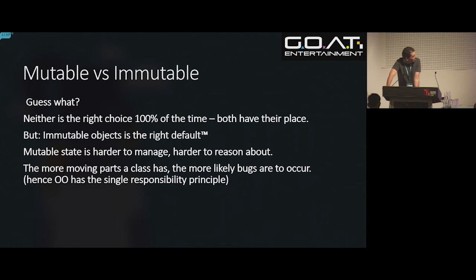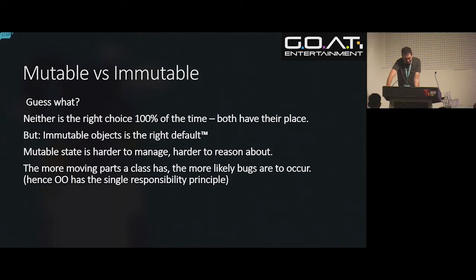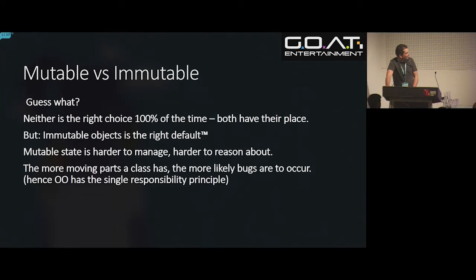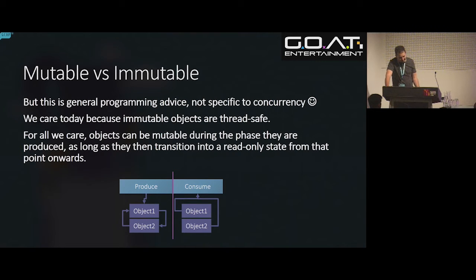Neither is always the right choice, but immutable objects should be our default. Immutable state is the cause of all our bugs. If you have classes with a thousand reasons to change, even OO says that's wrong. We care about immutable objects because immutable objects are thread-safe. There's usually a production phase where you're building an object and it has to change, but afterwards you transition into the consumption phase and as long as it's immutable from that point onwards, you don't have to do any synchronization. The more stuff you can turn into immutable objects, the better.